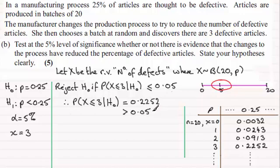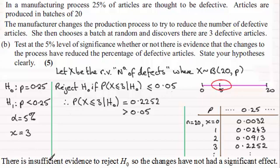So what does that mean? Well, it means to say that 3 would be within this kind of red region here that I've circled. It'd be an acceptable value if the null hypothesis was 0.25. So what's happened is that despite having these changes and getting three defective articles, it's not sufficient to suggest that we've improved the manufacturing process. So in summary, there is insufficient evidence to reject the null hypothesis. So the changes have not made a significant effect.